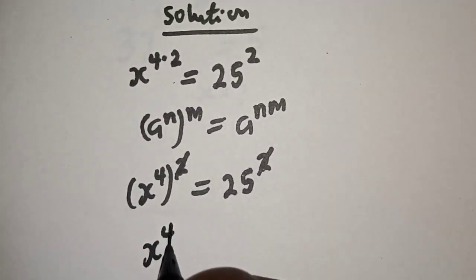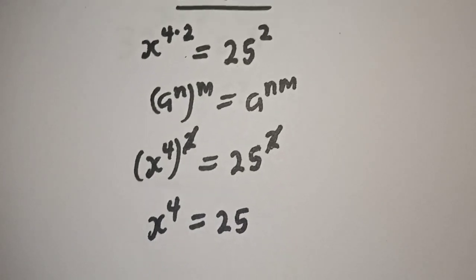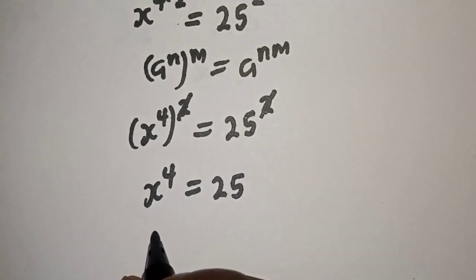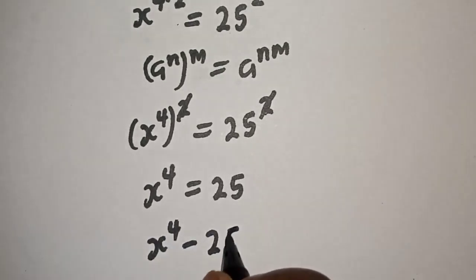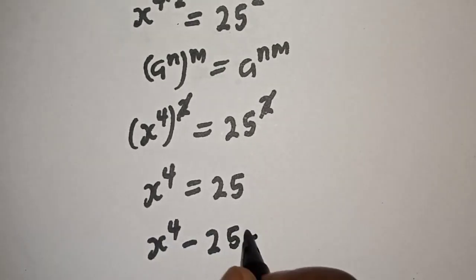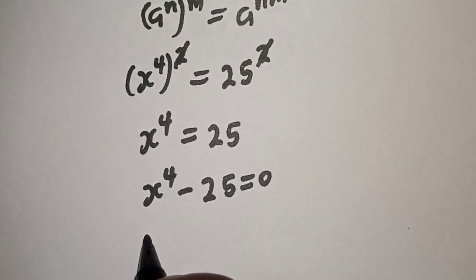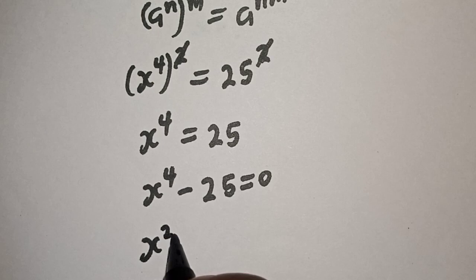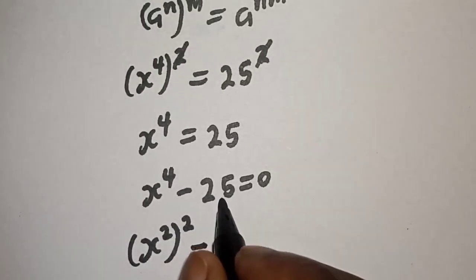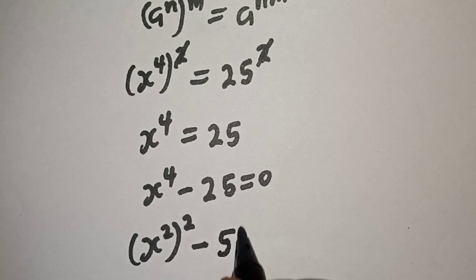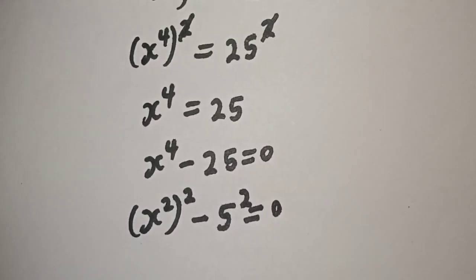Let's bring this to the other side: s raised to power 4 minus 25 is equal to 0. But s raised to power 4 can also be written as s squared raised to power 2, and minus 25 can be written as 5 squared. This is equal to 0.